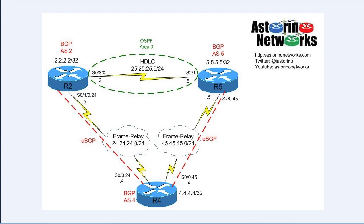The BGP backdoor feature is more of an advanced feature for CCIE Route and Switch or CCNP candidates, or people who generally like to learn about networking. What it allows us to do is prefer a backdoor link — hence the name — as opposed to a main link through something like a service provider. Let me explain further with the diagram we're working with today, which has three routers: Router 2, 5, and 4.